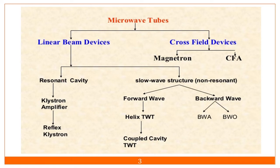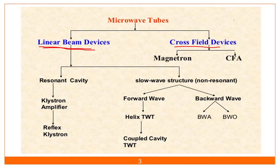So, the types of micro-tubes we have discussed about — there are two types. That is the linear beam and the cross-field. Linear beam has a single beam of electrons, and in the cross-field you will find the beam is rotating or moving in a cross-field manner.